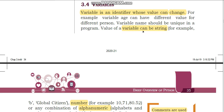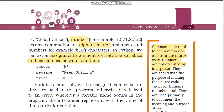The value of a variable can be a string — for example, 'global citizen'. This is a string, that is letters or alphabets, that's why the type of the variable is string. Number — for example, 10, 71, 80.52. These are numbers. Or a combination of alphanumeric, that is alphabets and numbers — for example, B10. So this is the alphanumeric characters.